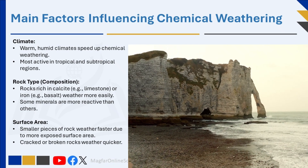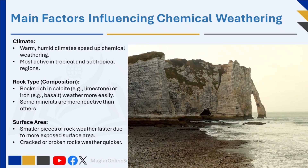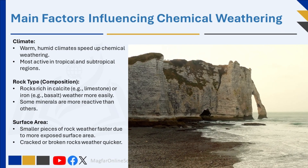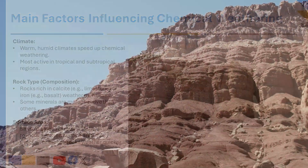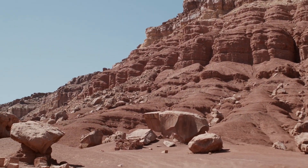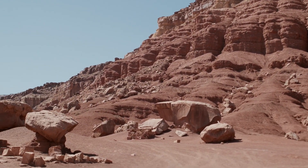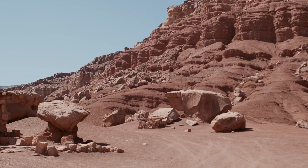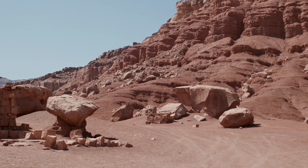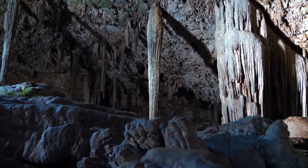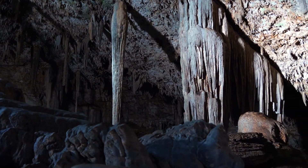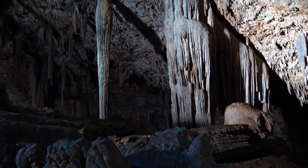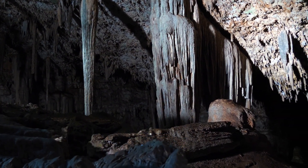Over time, chemical weathering shapes the earth's surface, forming caves, underground rivers, and fertile soil that supports life. It plays a vital role in the rock cycle, ecosystem development, and agriculture, making it a key process in earth's changing landscape.